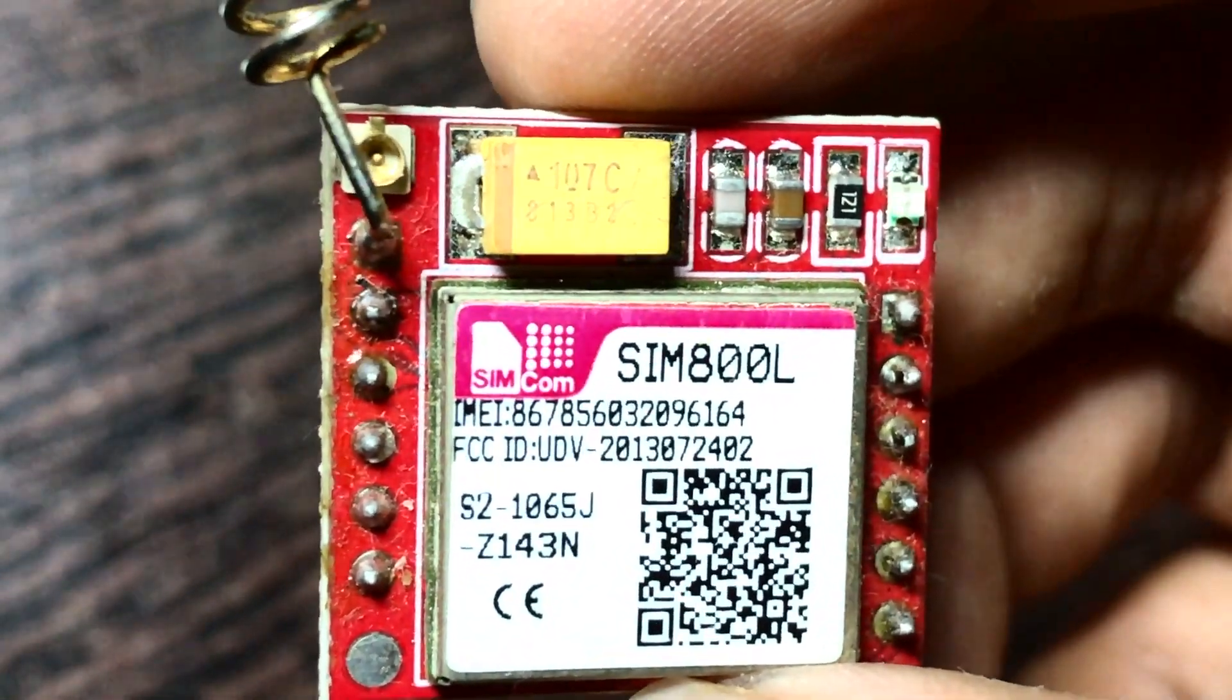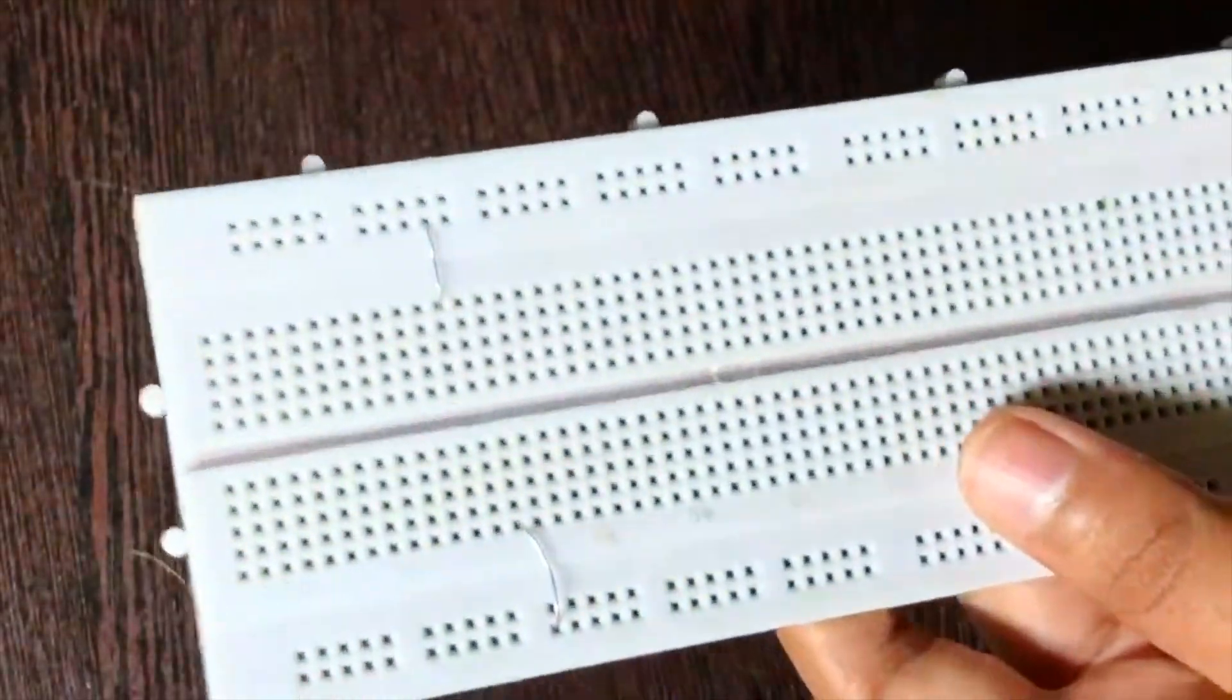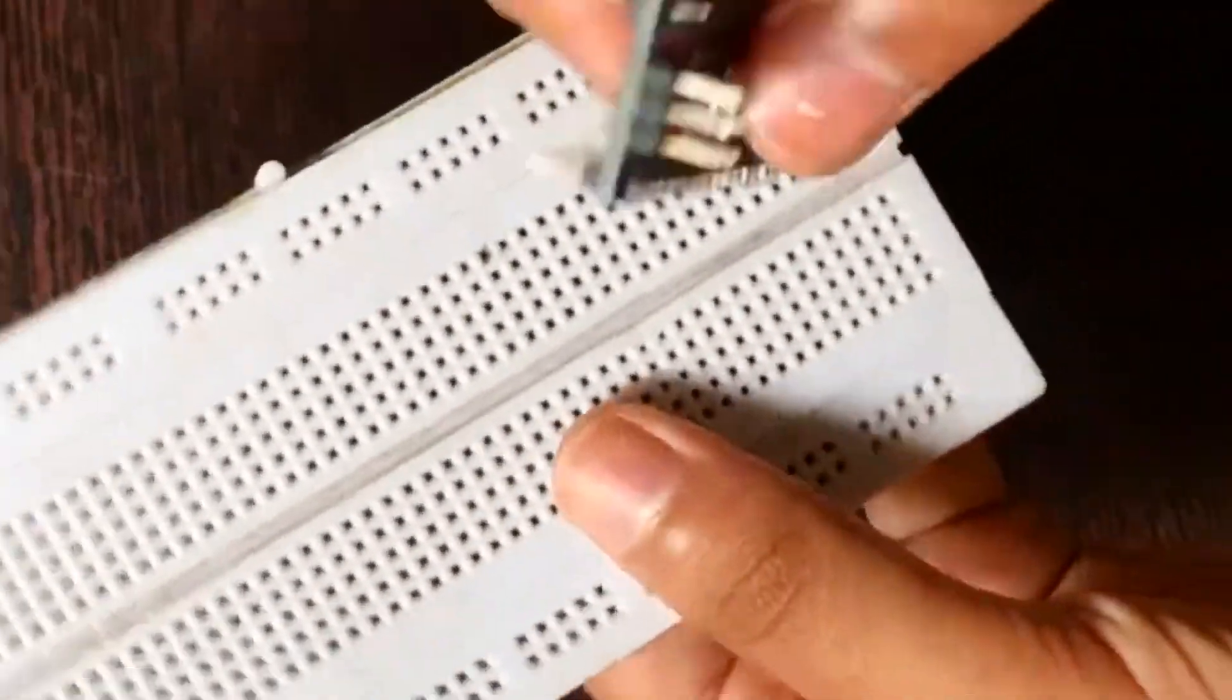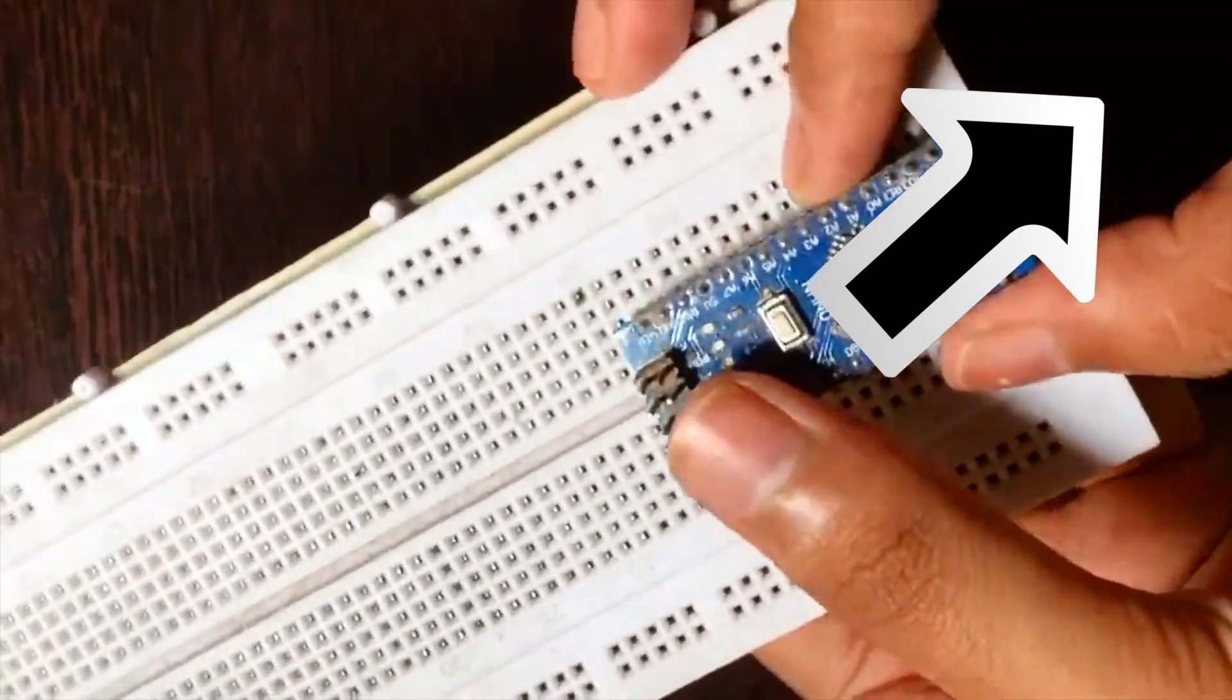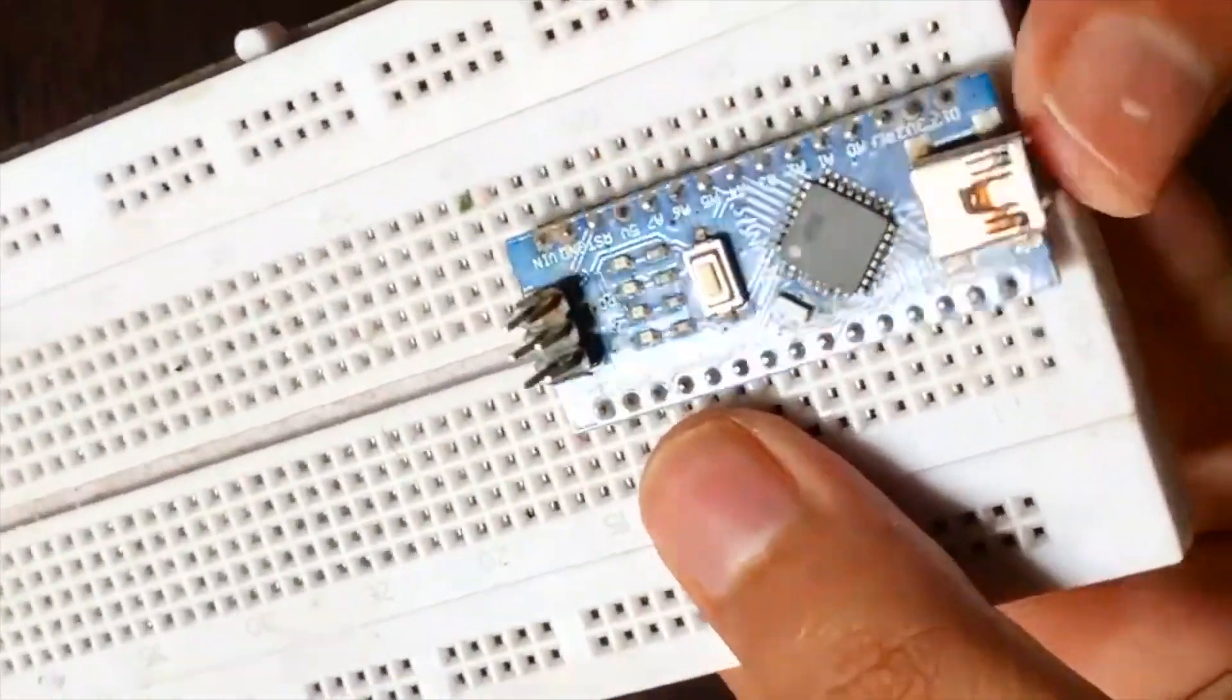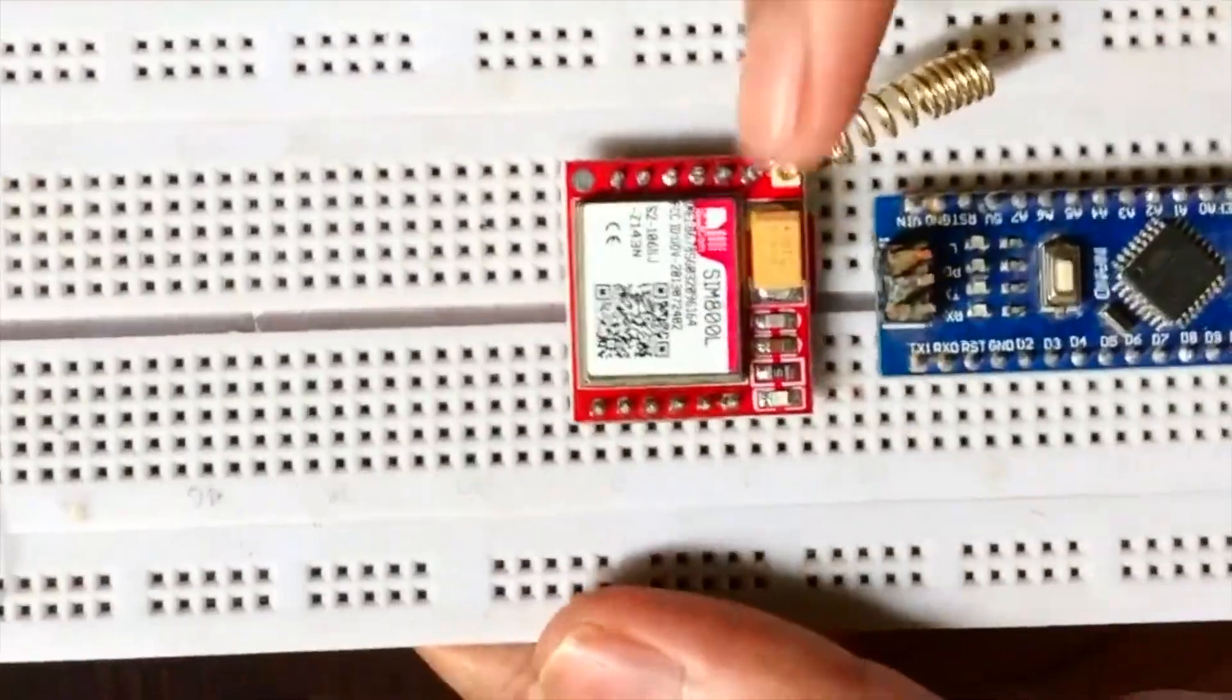Now let's start wiring. Here is the breadboard which I am going to use in this project. This is the Arduino Nano. If you want to know more about it, click the i button above. Let's fix the Arduino Nano in there and fix the GSM module perfectly.